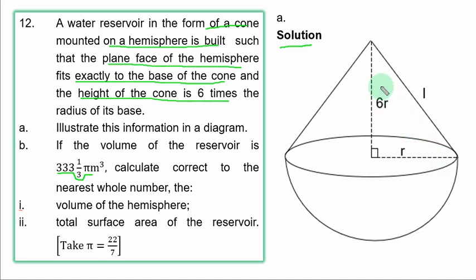So instead of having h here, you replace h with 6r. This is the slant height of the cone. So let us proceed.